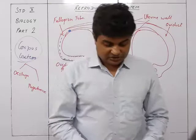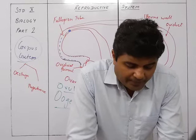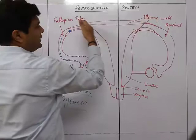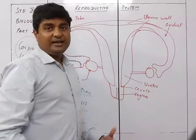The uterus has two regions: an upper wider portion which receives the two oviducts, and a smaller lower constricted part called the cervix or neck of the uterus. The upper expanded part connects to the oviduct and the narrowed lower end is the cervix.